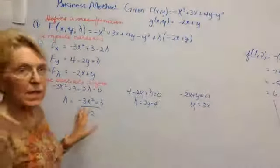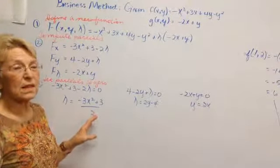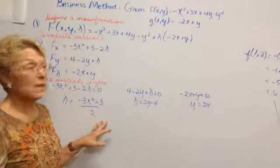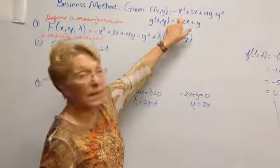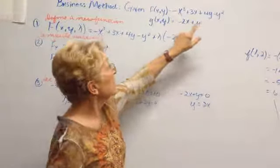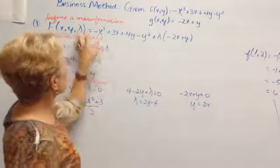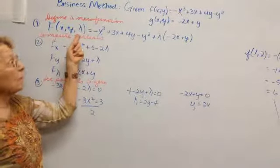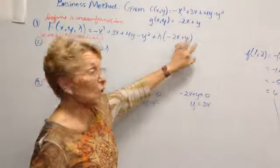Here is a Lagrange done by a method taught in Math 217, the business analysis class. Some of my Calc 3 students like this method, so I'm going to show it to you early on. We have some equations given to us. A function in x and y is minus x cubed plus 3x plus 4y minus y squared. And some constraint function is minus 2x plus y. So the first thing is to define a new function, cap F of x, y, lambda. So here's our f function and lambda times our constraint function, all put together.